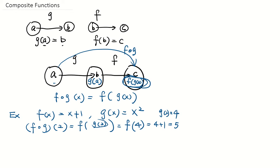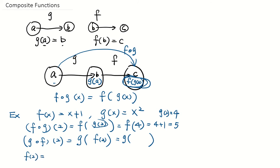Similarly, another example: what is g of f of 2? You may think they look pretty similar — are they the same thing? Well, g of f of 2 by definition is g of f of 2. So what is f of 2? f of 2 is 2 plus 1, which is 3. So we replace f of 2 with 3, and we have g of 3. g of 3 is equal to 3 squared, which is 9.